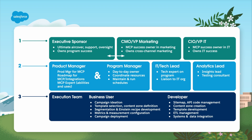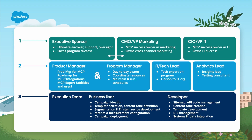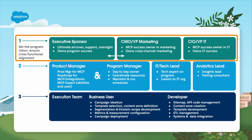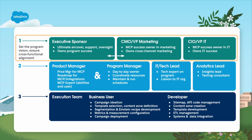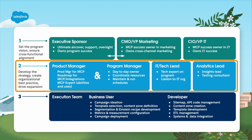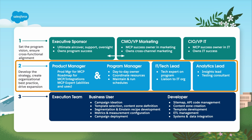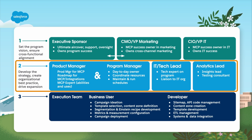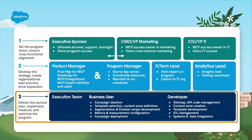Here are three program stakeholder functions to identify. The function is more important than the number of people or their titles. The first functional group are leaders who set the program vision and ensure cross-functional alignment. The second group develops the strategy, creates organizational best practices, and drives expansion — roles like product manager, program manager, tech or IT leads, and analytics lead. The third functional group of end users implement, measure, and optimize your use of personalization.